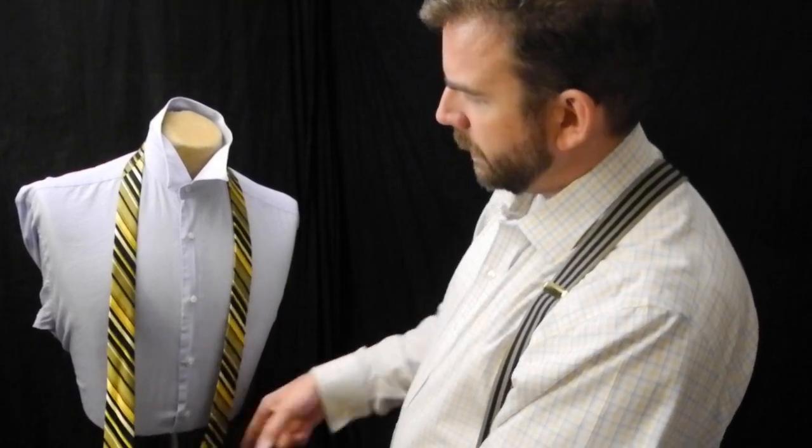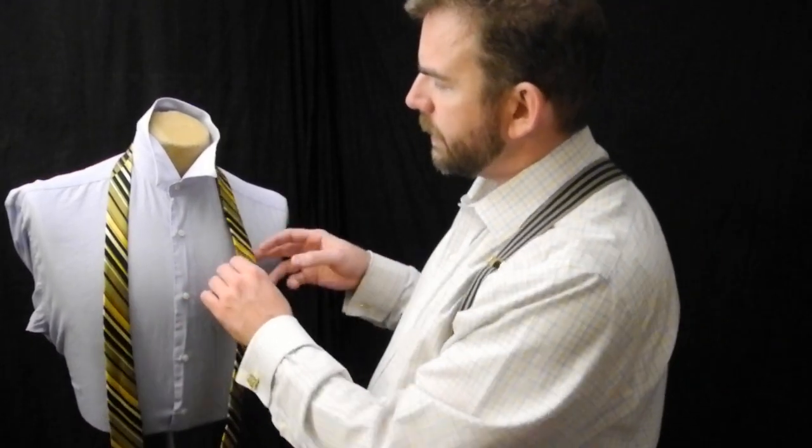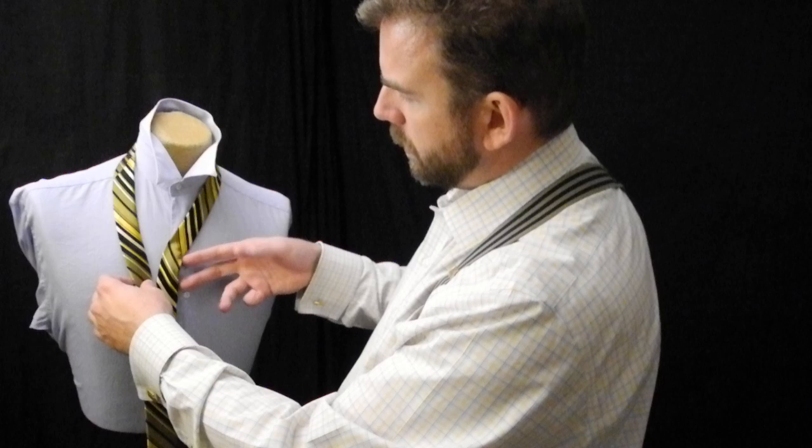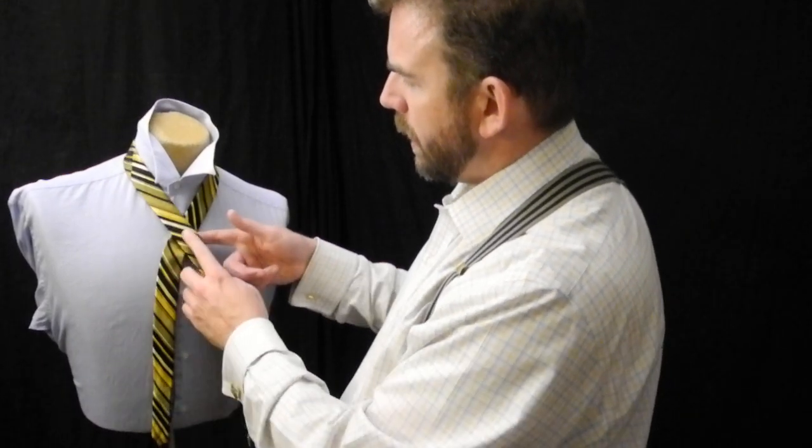So, length of the narrow end there, always crossing over at the second button. The narrow end across the top, the wide end crossing over, both over that second button.